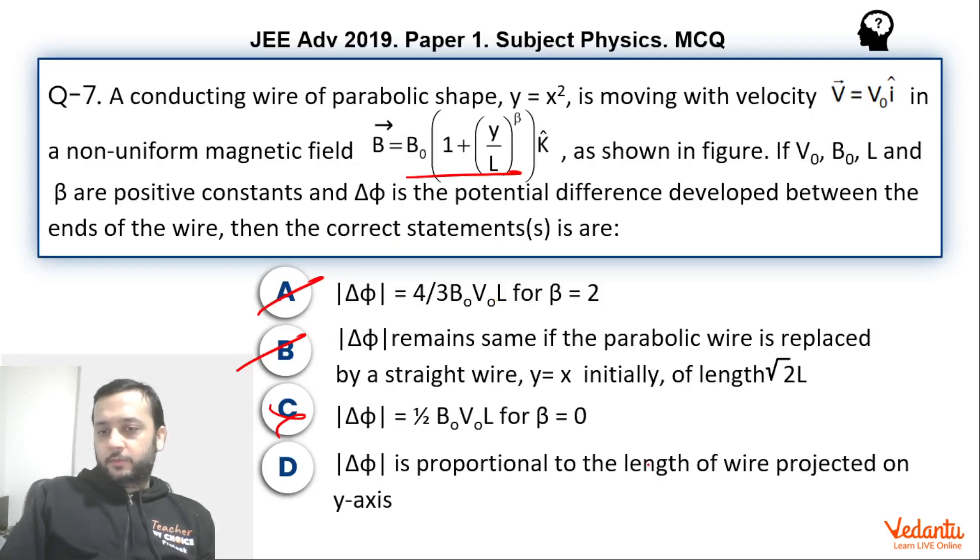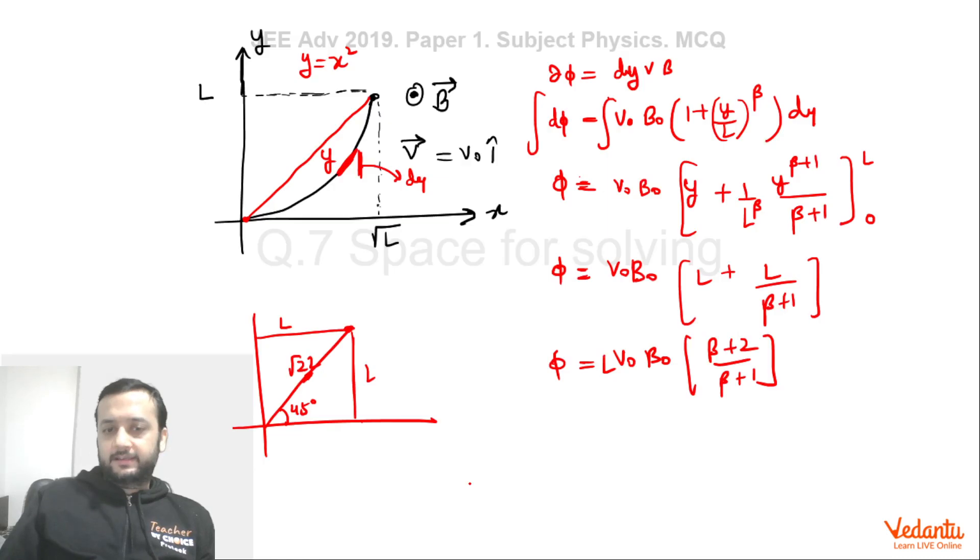If you see this option, Δφ is proportional to length of the wire projected on the y-axis. So of course we can see that Δφ, which is the EMF induced, is actually proportional to L. Because this length, the length of the projection on the y-axis, is nothing but L. And hence option D is also right.